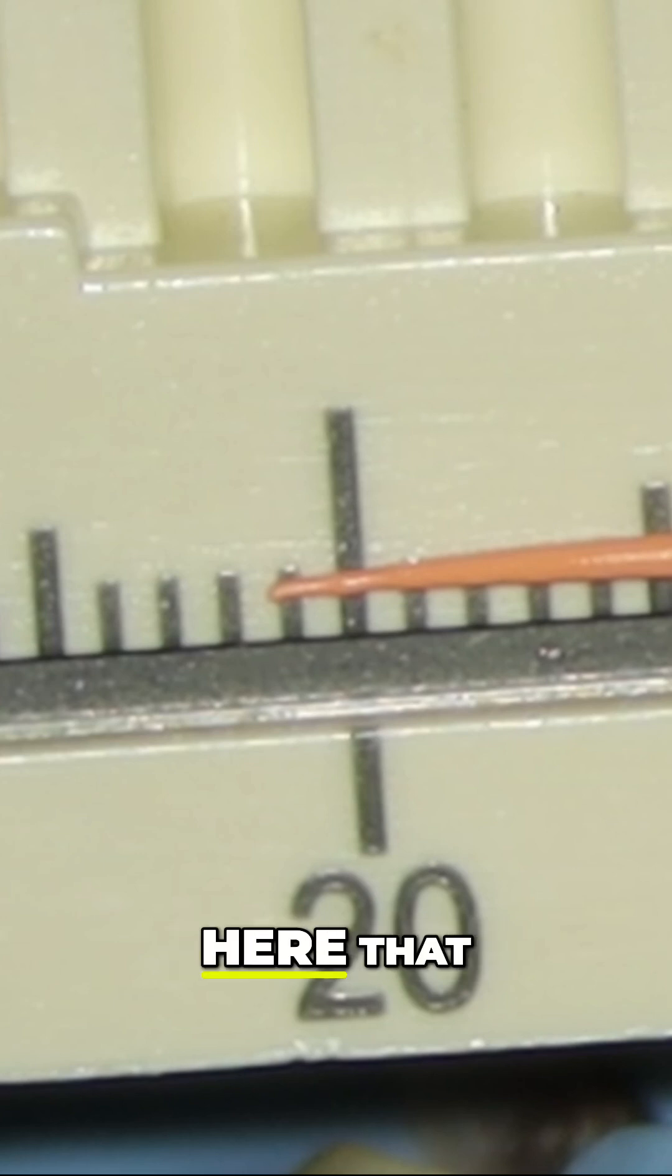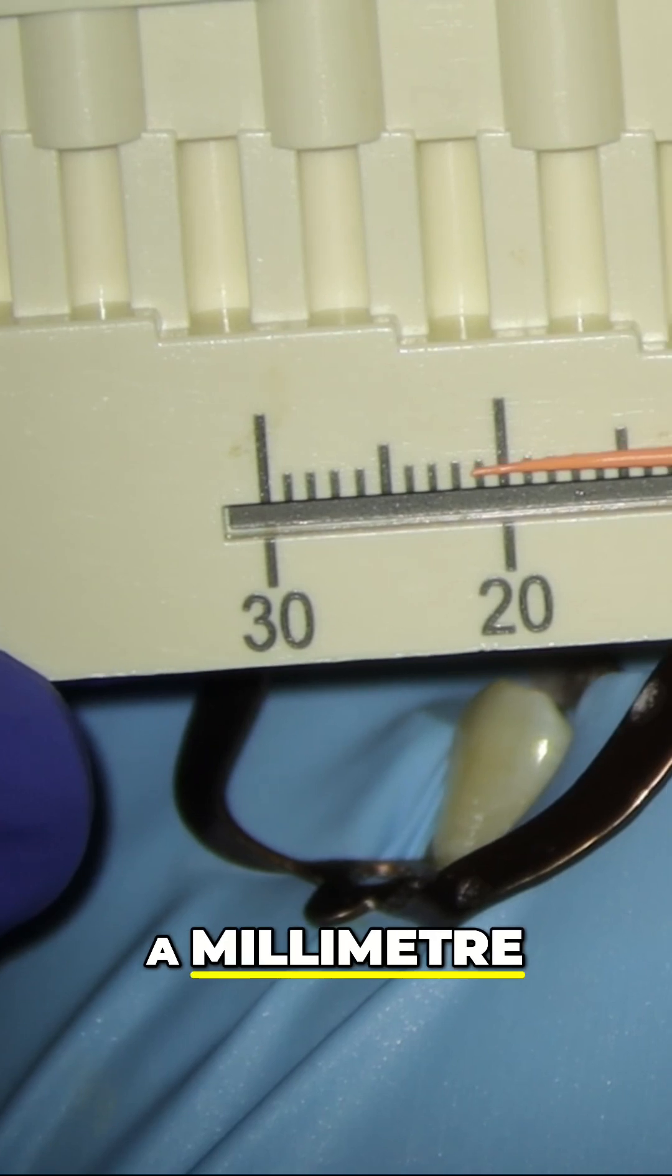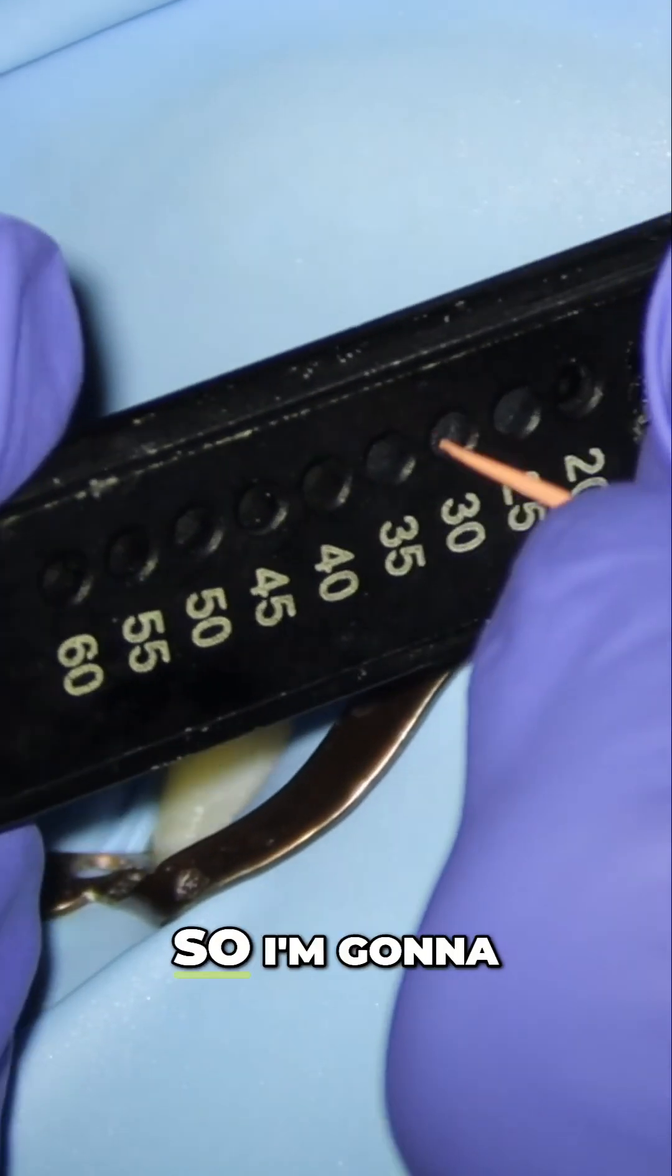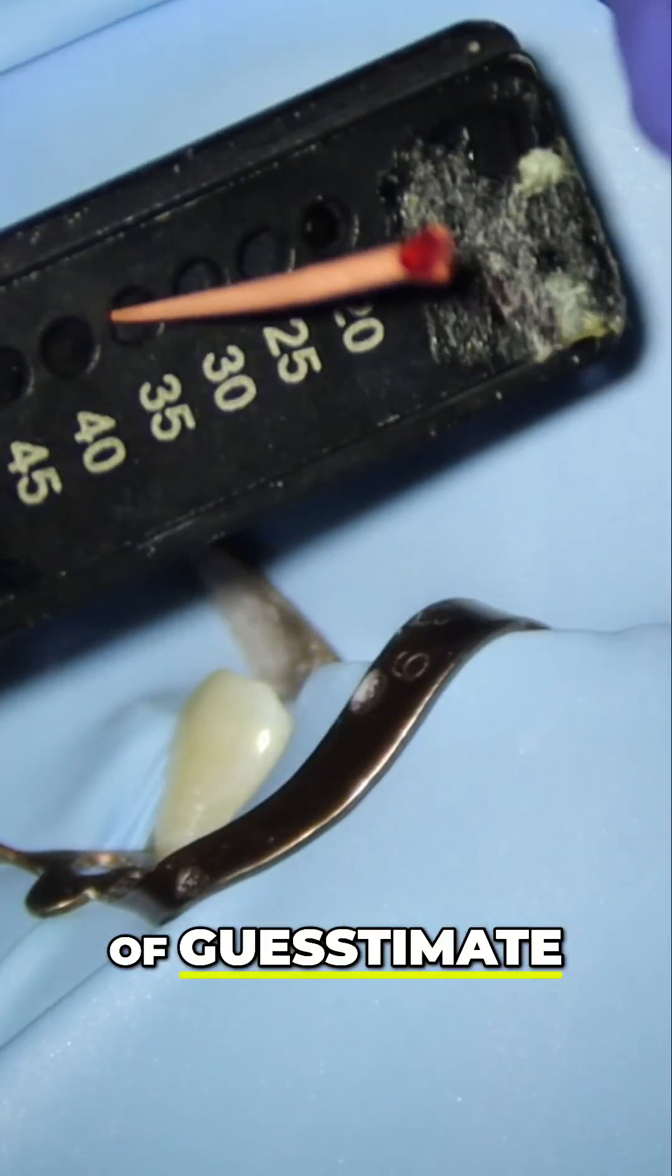And we can see here that we're at 21.5 millimeters, so a millimeter longer than we should do. So I'm going to use this gutta cutter here. So I'm going to sort of guesstimate around the point where I'm about a millimeter.